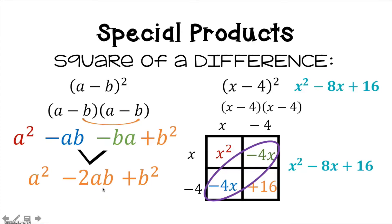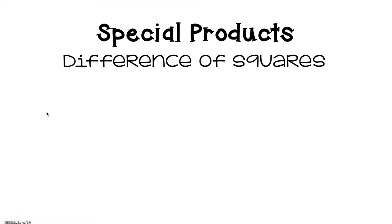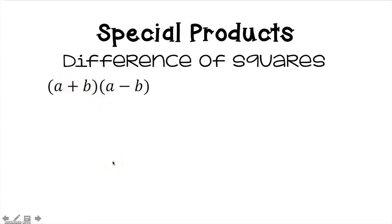You don't have to use the shortcut, but you're more than welcome to use this rule. Now let's talk about the third special product, which is a little different from square of a sum and square of a difference. This is a difference of squares. It's set up as (a + b)(a − b) — there's a difference in signs between the two binomials.